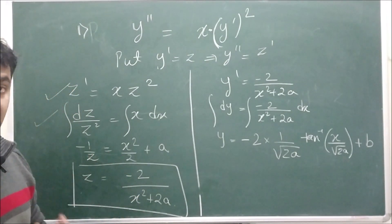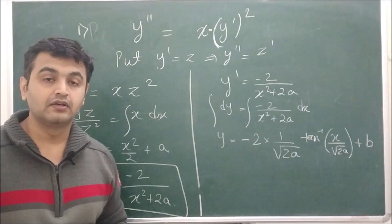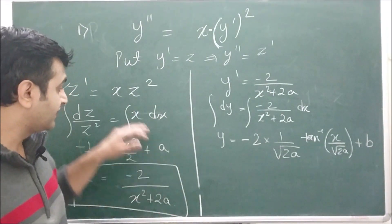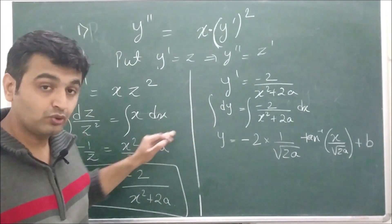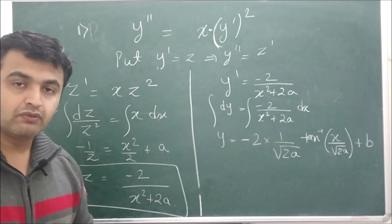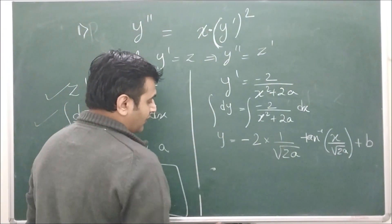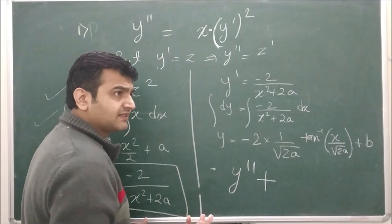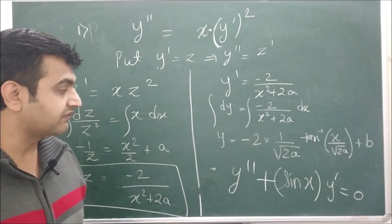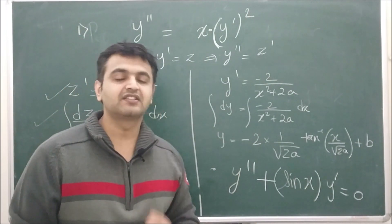Whenever you have a second order differential equation that does not involve y explicitly, you can always use this substitution to reduce it to first order, apply variable separable twice, and get the answer. As a homework problem, try solving y double prime plus sin(x) times y prime equal to 0, and share your solution in the comment section.